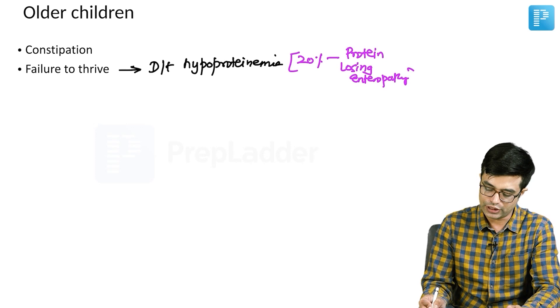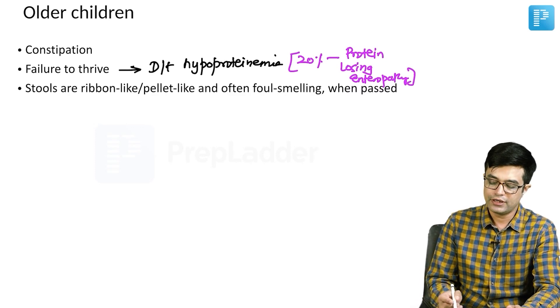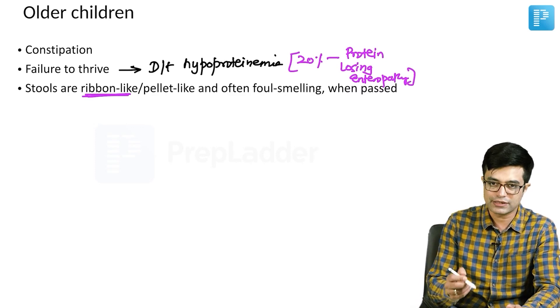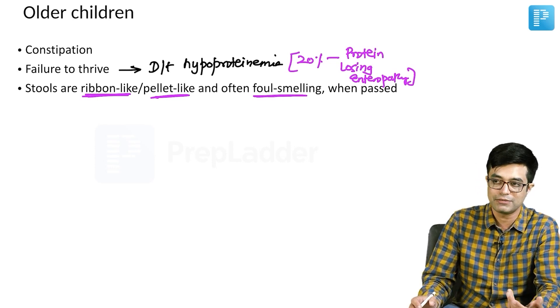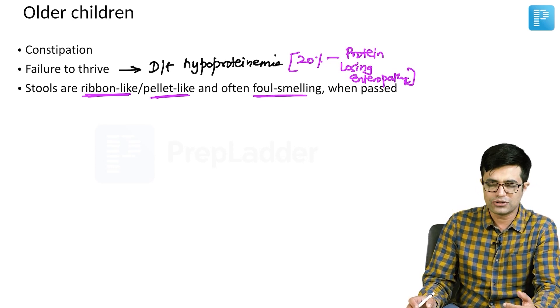So, there is failure to thrive. Then these children will have ribbon like stools when they pass or pellet like stools which are often foul smelling when they are passed. They are passed at a gap of more than sometimes 7 to 10 days and they cause a lot of problem.